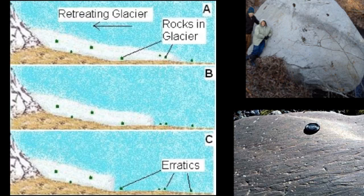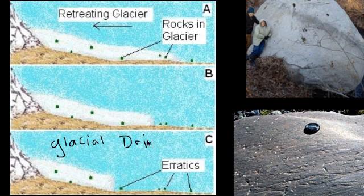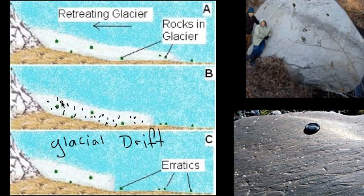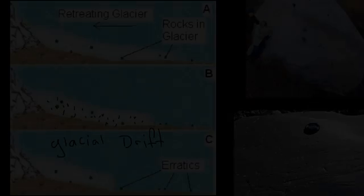Now let's talk about glacial drift — G-L-A-C-I-A-L drift. An erratic is any single large rock carried by a glacier from far away. Glacial drift is all the rest of the sediment carried by a glacier — material drifting from one place to another as the glacier moves. The difference: glacial drift is the general term for all rocks carried by a glacier, while an erratic is a single large individual rock deposited when the glacier melts.